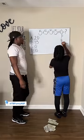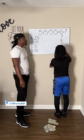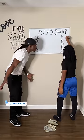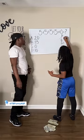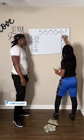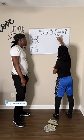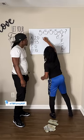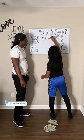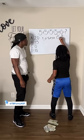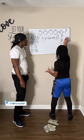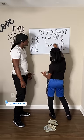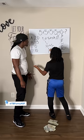Please excuse my dear aunt salad — parentheses, no; exponents, no; multiplication, yes — five times zero is zero; division, no; addition, yes — five plus five plus five plus zero. Scratch that zero. Five plus five is ten, plus five equals 15.